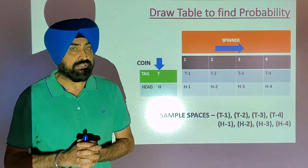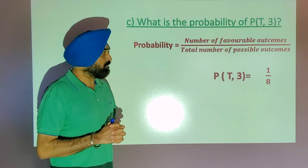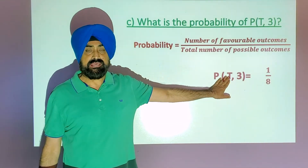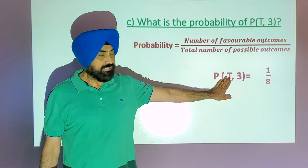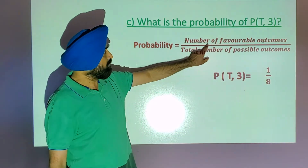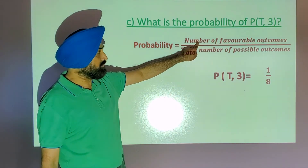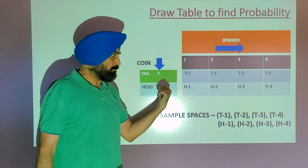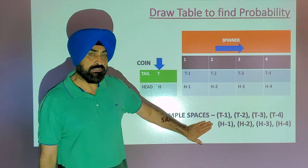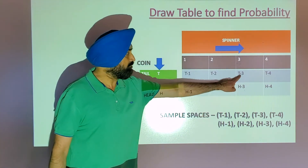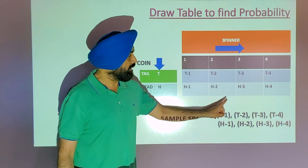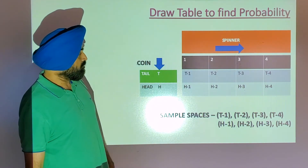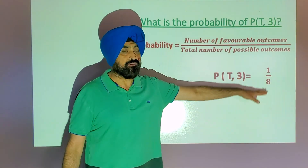What we have to calculate? We have to calculate what is the probability of getting T and 3 — T means tail on the coin and 3 on the spinner. The formula is number of favorable outcomes divided by total number of possible outcomes. In the sample space, how many times did T3 come? T3 came only once. So the probability is 1 over 8.